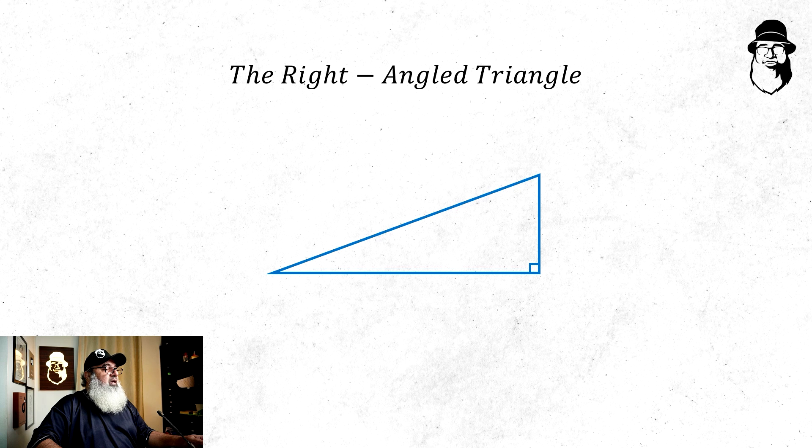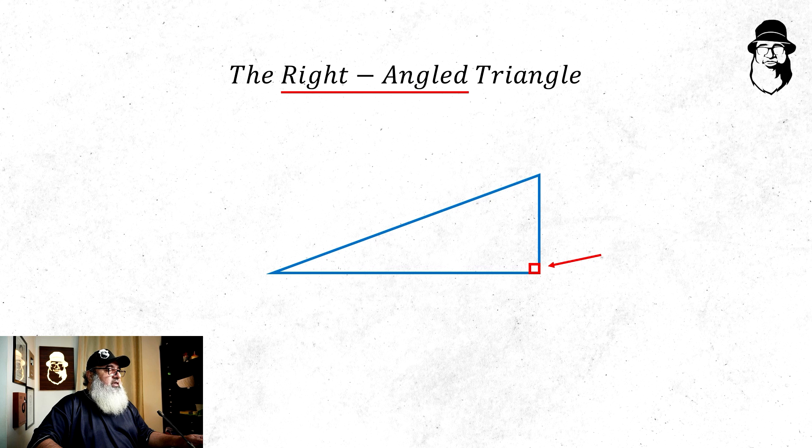Finally, a triangle which has a right angle in it is called a right angled triangle. When an angle is right angled, it is normal to put a small square in it. So the square tells us that the angle is 90 degrees.